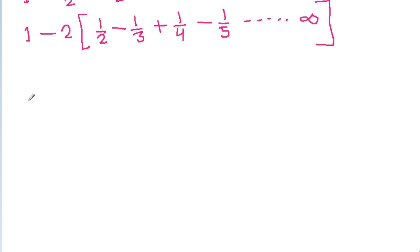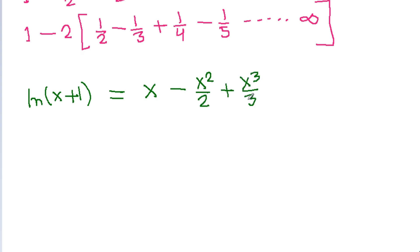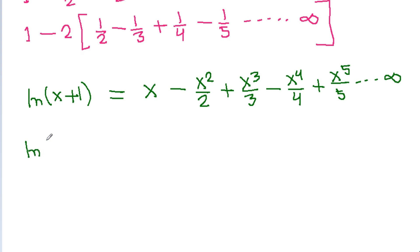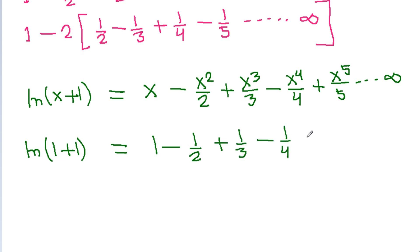We know the expansion of ln(x+1) = x - x²/2 + x³/3 - x⁴/4 + x⁵/5 up to infinity. If we put x = 1, then ln(2) = 1 - 1/2 + 1/3 - 1/4 + 1/5 up to infinity.